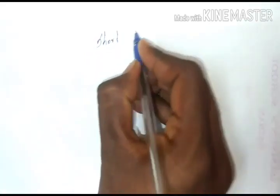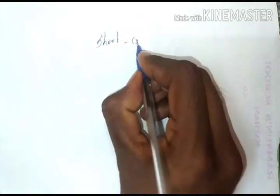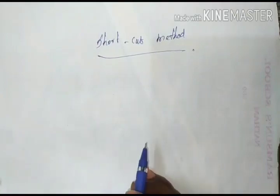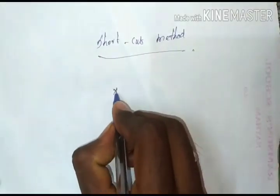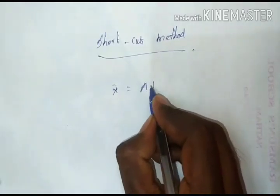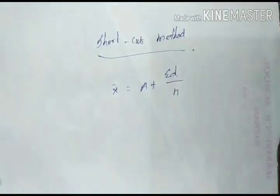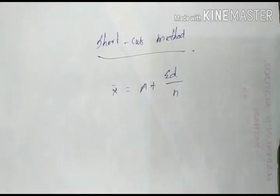Next we are going to explain the shortcut method. Very simple formula: x̄ = a + Σd ÷ n. Here, a is the assumed value.